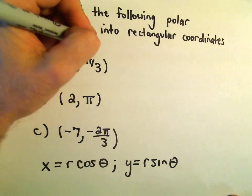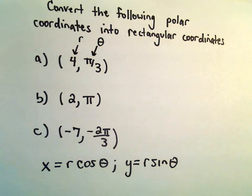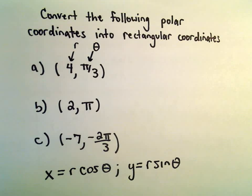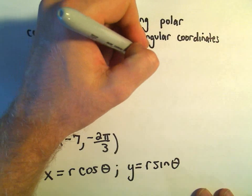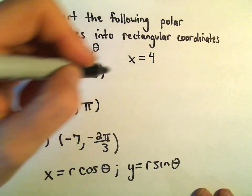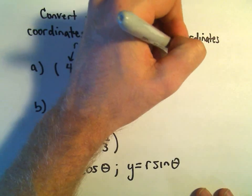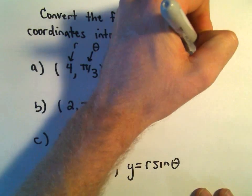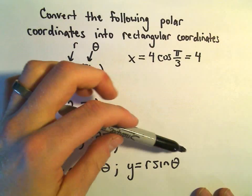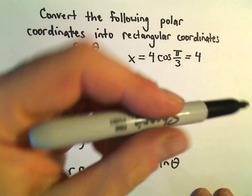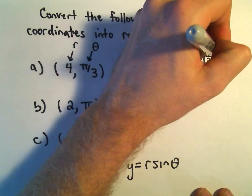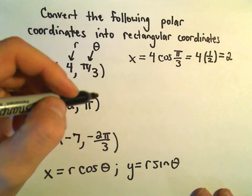Remember the first point is our r value, the second one is our theta value. So if we convert (4, π/3) from polar coordinates into rectangular coordinates, we'll get x equals 4 times cosine of pi over 3. Cosine of pi over 3 is 1 half, so we'll get the x coordinate of 2.